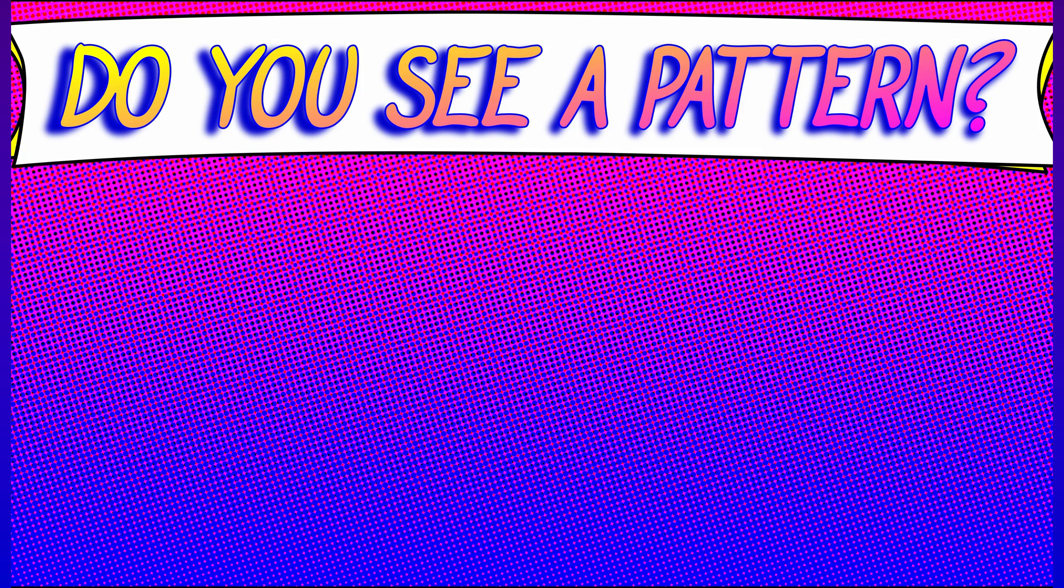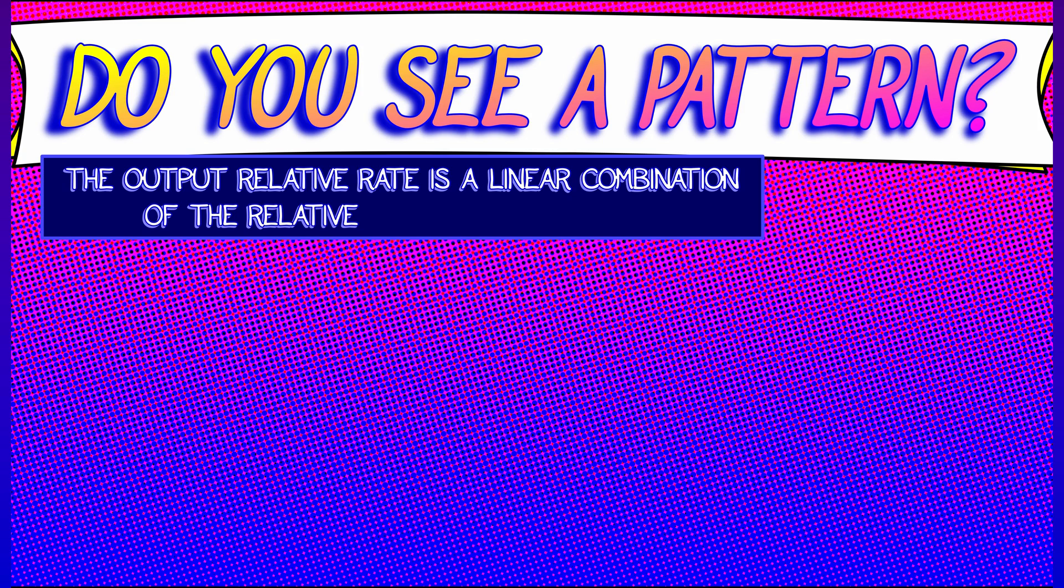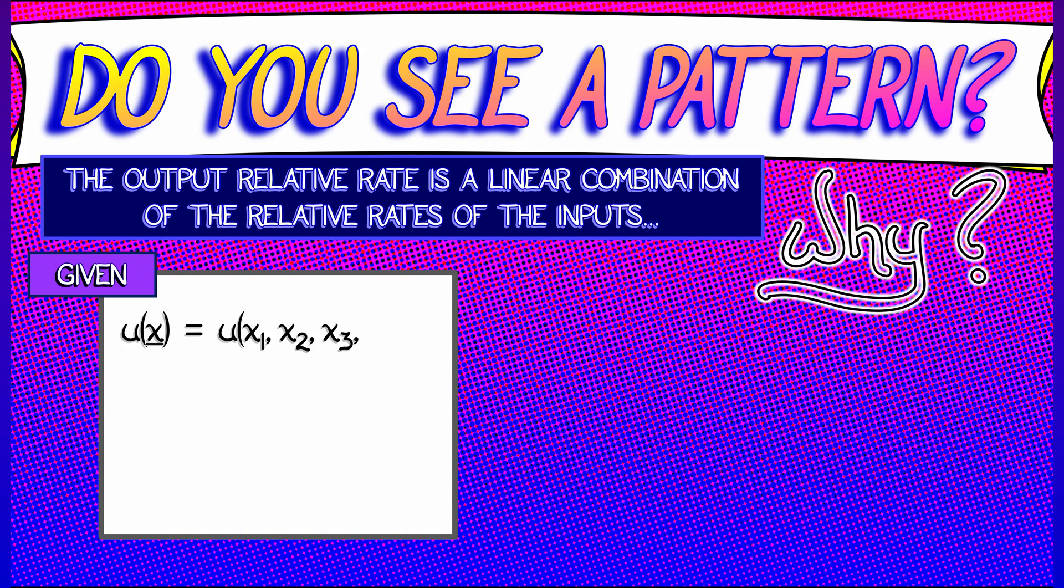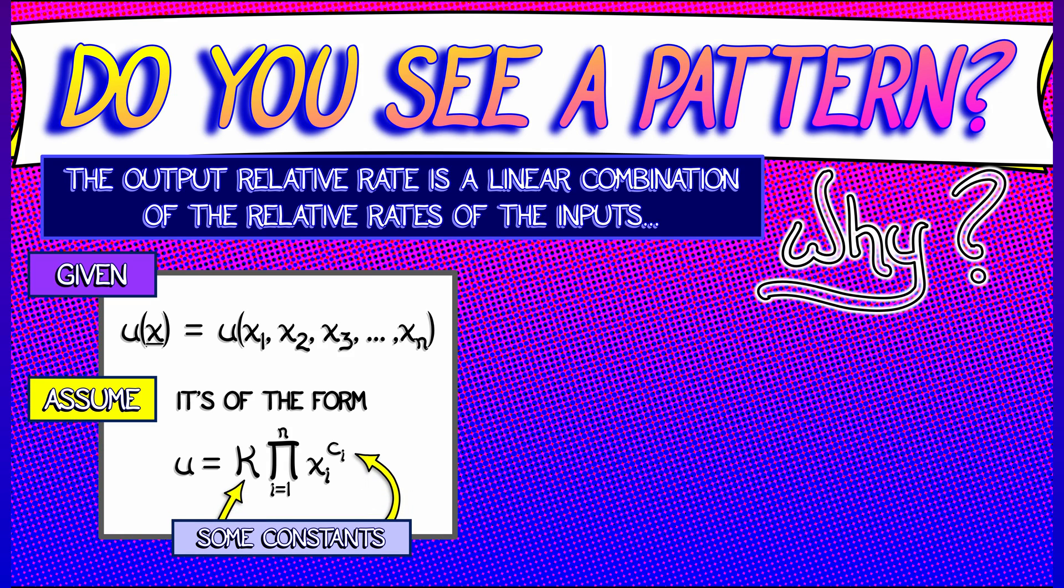especially if you do some more problems this way. That the output relative rate of change is a linear combination of the relative rates of change of the inputs. Why? Let's make the problem harder in order to see. Let's say that instead of four variables, I have n variables, x1 up through xn. And let's assume a general form for u that it's some constant k times the products of various powers of the xi variables. Let's say those powers are c sub i. That's exactly what we had last time where those c sub i's were equal to one or three or negative one or negative three.